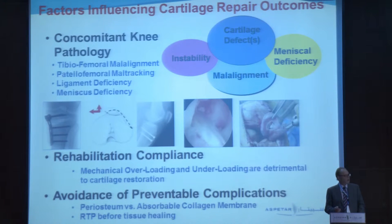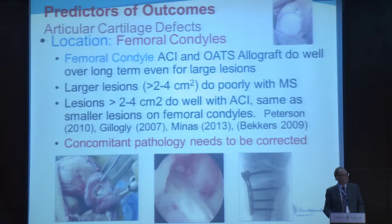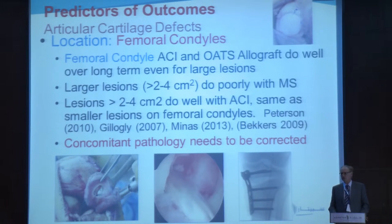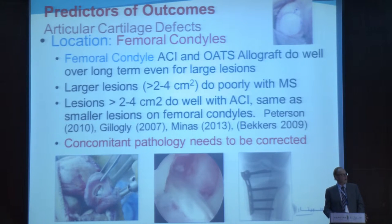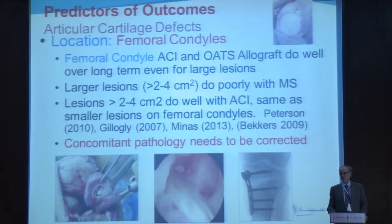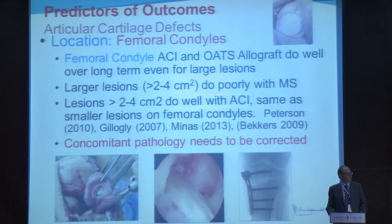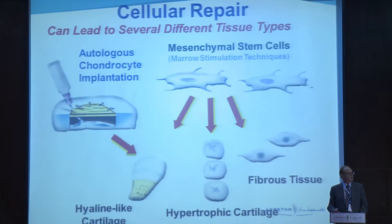Another avoidable complication would be returning to play prematurely. If we look at femoral condyle location, all cartilage lesions are not the same. Femoral condyle lesions — ACI and OATS allografts do well long-term even for large lesions. Larger lesions than 4 cm² and even 2–4 cm² do poorly long-term even with microfracture. Small lesions, however, will do well with marrow stimulation, as shown in multiple studies, provided the concomitant pathology is corrected.